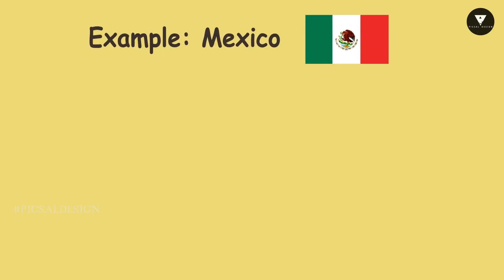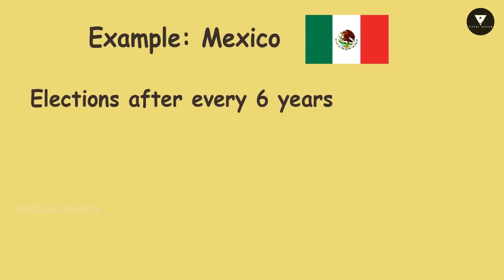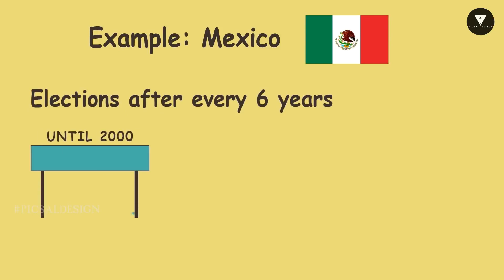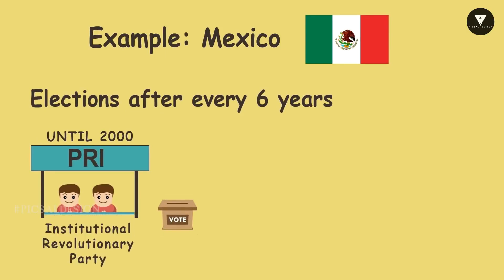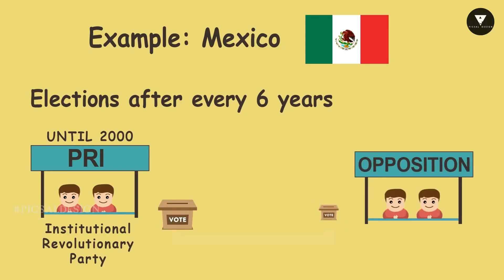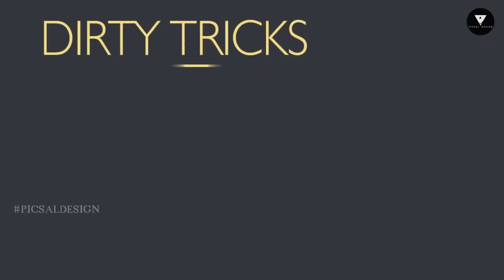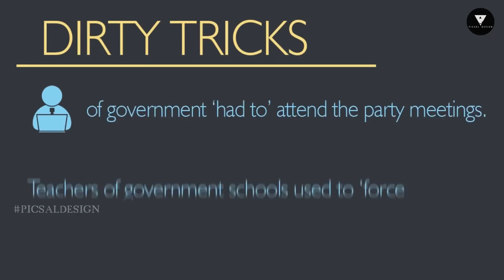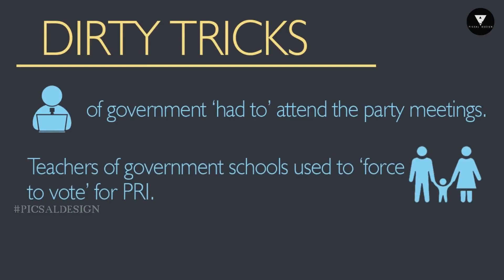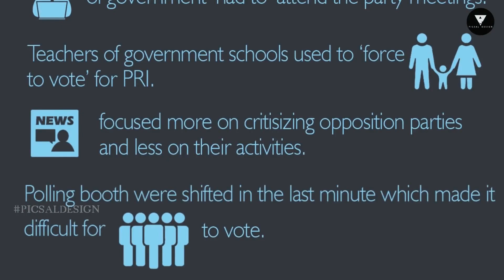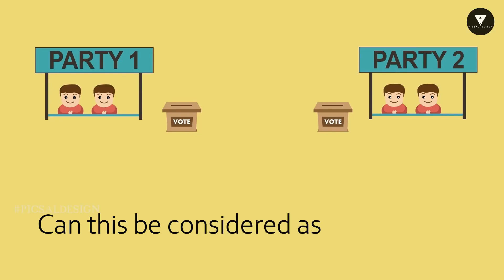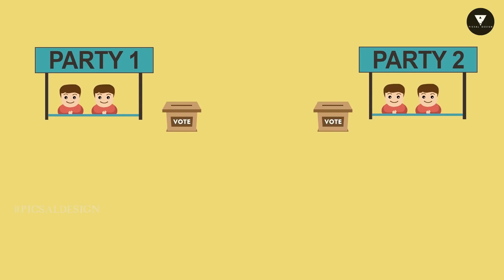Can such a government be called democratic? In Mexico, since its independence in 1930, elections are held after every six years to elect its president. But until 2000, every election was won by a party called PRI — the Institutional Revolutionary Party. Opposition parties never won a single election. PRI asked government officials to attend party meetings, teachers of government schools used to force parents to vote for PRI, and polling booths were shifted at the last minute, making it difficult for people to cast their vote. Can we consider such elections as examples of people electing their rulers?